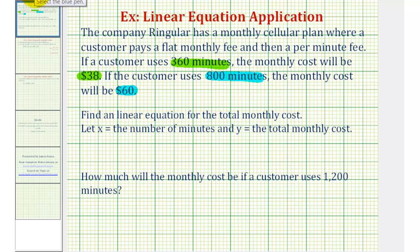So to get this started, we want to represent the given information as ordered pairs, where the x-coordinate will be the number of minutes used and the y-coordinate will be the total monthly cost. So one ordered pair would be (360, 38) and the second ordered pair would be (800, 60).